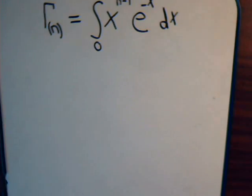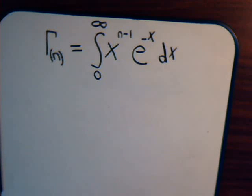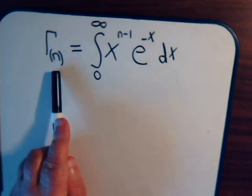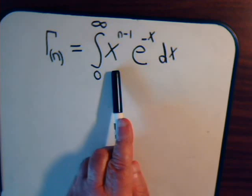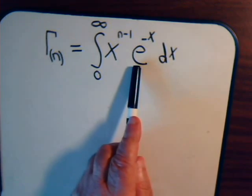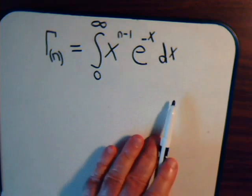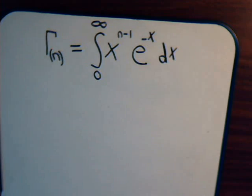The basic definition of the gamma function involves this rather strange looking integral. If we say the gamma function of n, then over here in the integral we have x, and the exponent of that is whatever n is subtract 1. Then we have e to the minus x dx. What's interesting about the gamma function is some of the basic identities that come out of it. Here we're going to derive probably the most basic identity by considering this integral and attacking it using integration by parts.